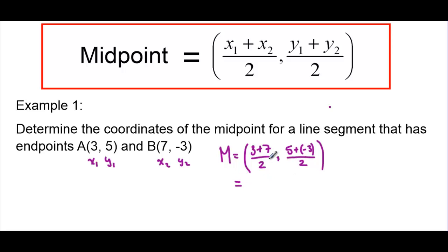Now some simple arithmetic. 3 plus 7 is 10. 10 divided by 2 is 5. So the x value of our midpoint is going to be 5. 5 plus negative 3. Well, a plus minus is the same as just saying minus. So 5 minus 3 is 2. And 2 divided by 2 is 1. So the y value of our midpoint is 1, which now gives us our midpoint of (5,1).